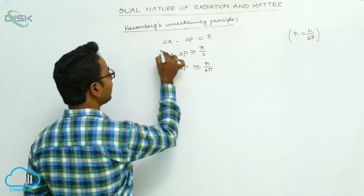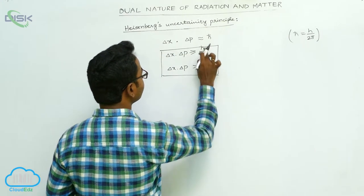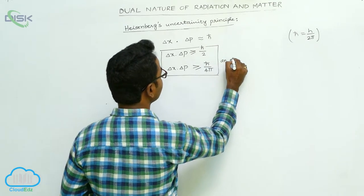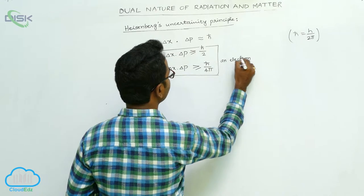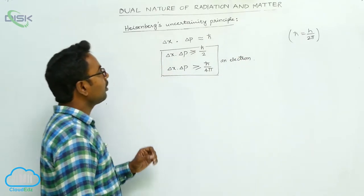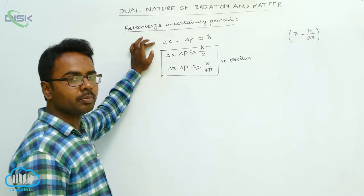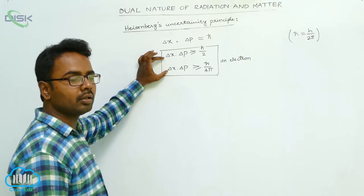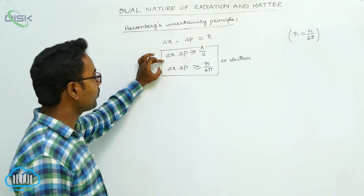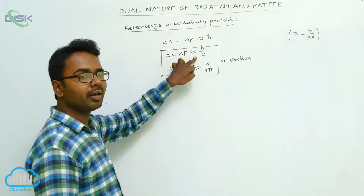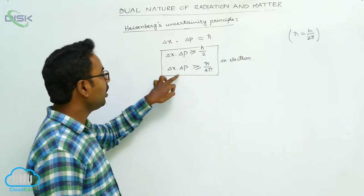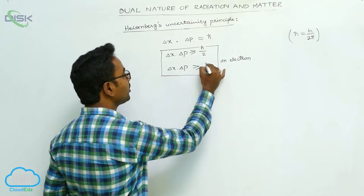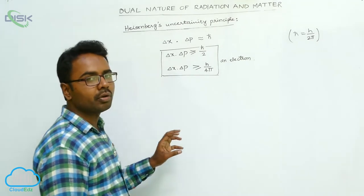This is strictly for an electron only. But Heisenberg's Uncertainty Principle is also applicable to any other particles. Strictly for an electron, it is most correct to say delta x into delta p greater than or equal to h-cut by 2, or equivalently, delta x into delta p greater than or equal to h by 4 pi.